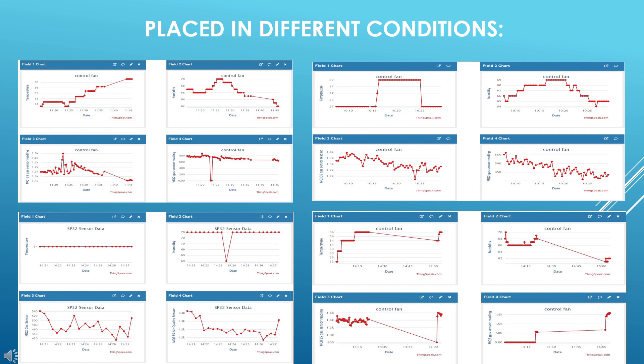The data likely reflects environmental changes based on the influence of a control fan, as seen in the temperature and humidity fluctuations. These experiments analyze how different conditions affect air quality in storage environments.